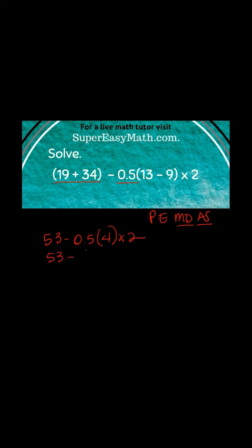So I'm just going to rewrite this 53. 0.5 times 4 is 2 times 2. So that's 53 minus 4 which gives me 49.